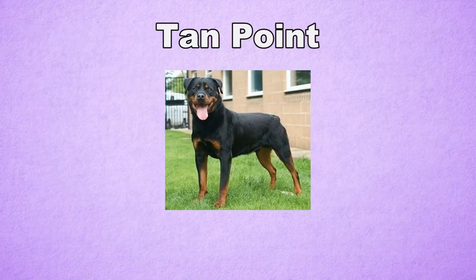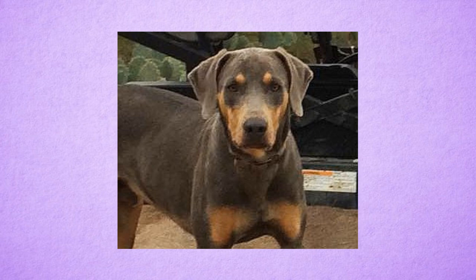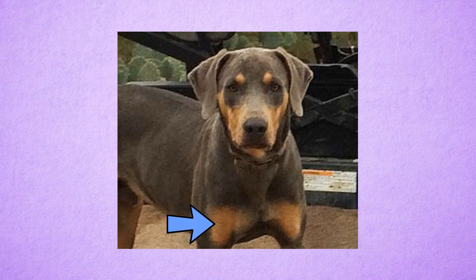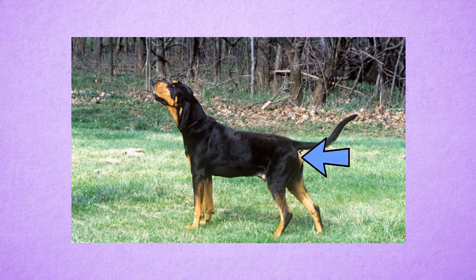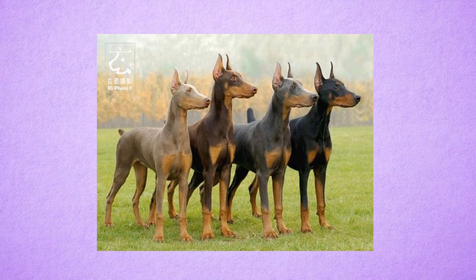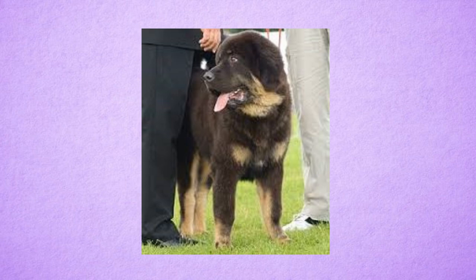The tan point gene is almost the bottom recessive in the A-locus. The range of markings on a tan point are very restricted. The red hairs, or tan in this pattern, appear as pips above the eyes, on their muzzles extending to their cheeks, pips on the cheeks, on the front of their necks or just below the head, two triangular patches on the front of the chest, on the lower legs and paws, and as a patch under the tail. Sometimes black marks can be seen on the toes, which is called penciling. Tan points can also be liver in red, blue in red, Isabella red, and merle in red. Sometimes the face markings can be covered by a mask, but the rest of the usual patterns are the same.